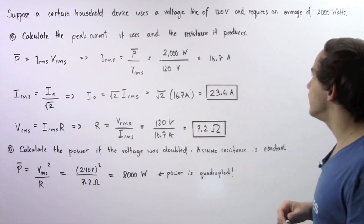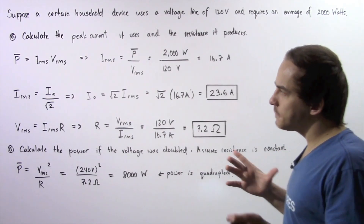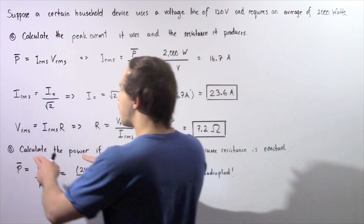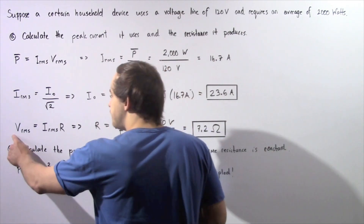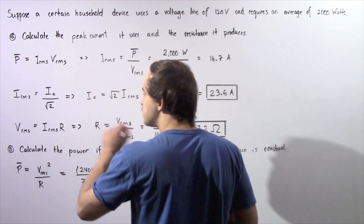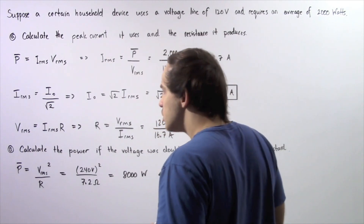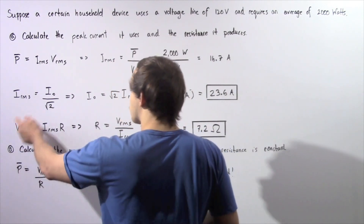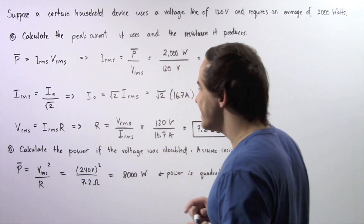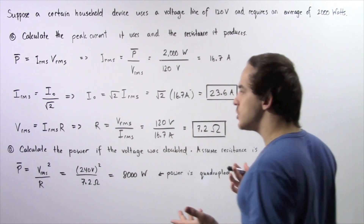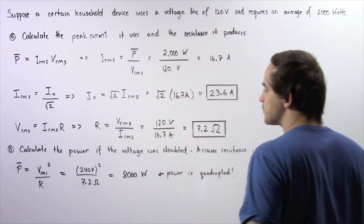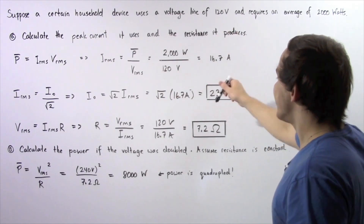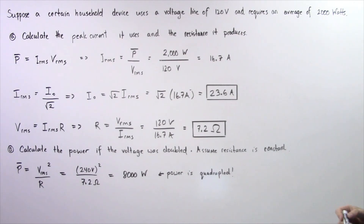Now we calculate the resistance. We use Ohm's law: V_RMS equals I_RMS multiplied by R. Since we know both V_RMS and I_RMS, we rearrange and solve for R. The resistance equals V_RMS divided by I_RMS, so 120 volts divided by 16.7 amps gives us a resistance of 7.2 ohms.